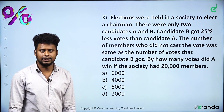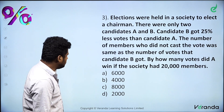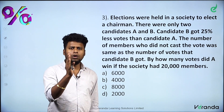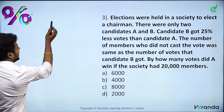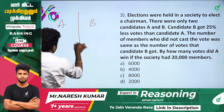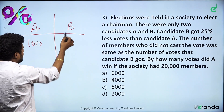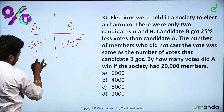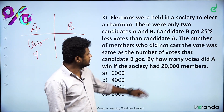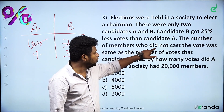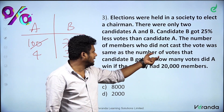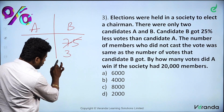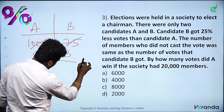Elections were held in a society to elect a chairman. There were only 2 candidates, A and B. Candidate B got 25% less votes than Candidate A. So if A has 100 votes, B has 75 votes — a ratio of 4 to 3. The number of members who did not cast their vote was the same as the number of votes that candidate B got — that is 3 parts.